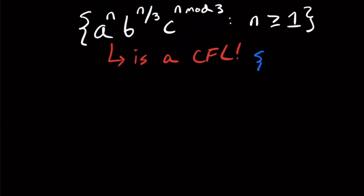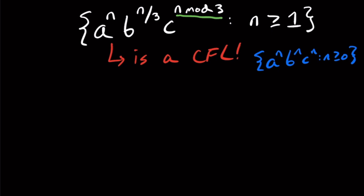You may think, how is that possible, because the language a to the n, b to the n, c to the n with n at least zero — that thing is not context-free. And it looks like this thing is very similar because we have n's in the exponents in all places. The trick is that there's a very small dependence on the number of c's compared to the number of a's. C is kind of related to the a's, but not in a very strong way — only the remainder when divided by three. There is a dependence between the a's and b's in that they march pretty much lockstep, but the number of c's is a very small dependence.